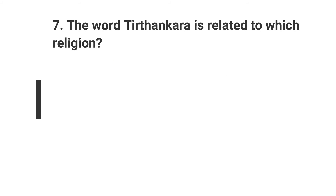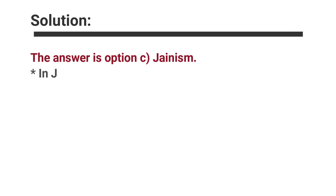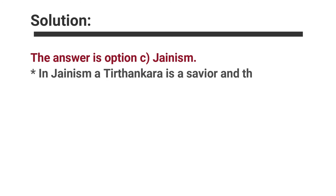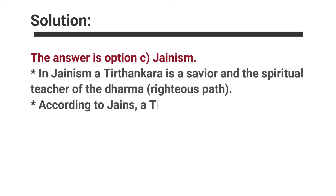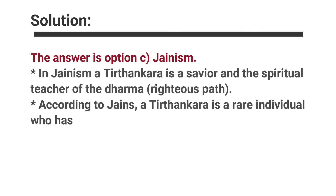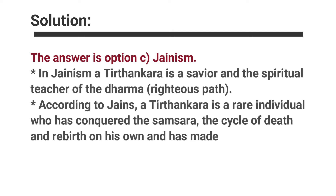Question number seven: The word 'Tirthankara' is related to which of the following religions? Options are A. Buddhism, B. Christianity, C. Jainism, D. Hinduism. The answer is option C, Jainism. In Jainism, a Tirthankara is a savior and spiritual teacher of the dharma, the righteous path. According to the Jains, a Tirthankara is a rare individual who has conquered samsara — the cycle of death and rebirth — on his own and has made a path for others to follow.